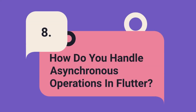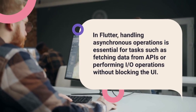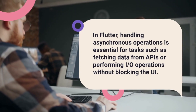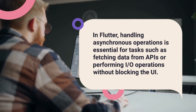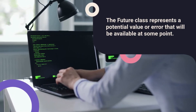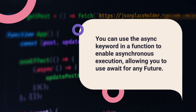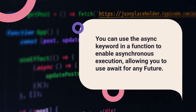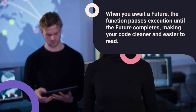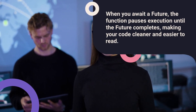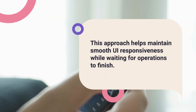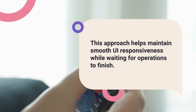Question 8: How do you handle asynchronous operations in Flutter? Explain the use of Future and async/await. In Flutter, handling asynchronous operations is essential for tasks such as fetching data from APIs or performing I/O operations without blocking the UI. The Future class represents a potential value or error that will be available at some point. You can use the async keyword in a function to enable asynchronous execution, allowing you to use await for any Future. When you await a Future, the function pauses execution until the Future completes, making your code cleaner and easier to read, while maintaining smooth UI responsiveness.